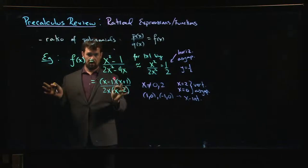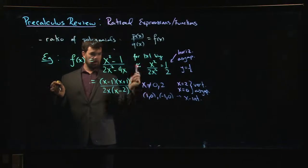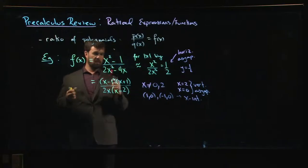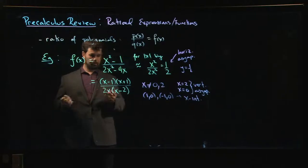There is no y-intercept because we can't put x equal to 0. There's a vertical asymptote there, so the y-axis is actually an asymptote in this case.